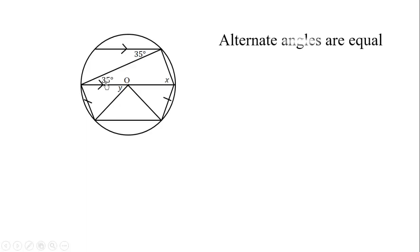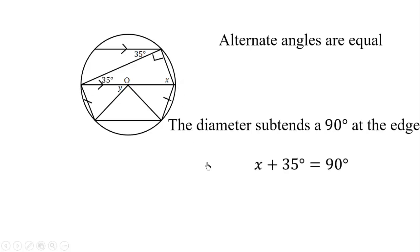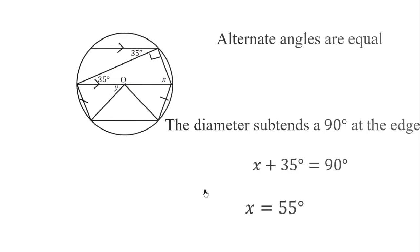To get this angle to be 35 degrees. Then this is 90 degrees because of this diameter. These two angles must add up to give us 90 degrees, hence x equals 55 degrees.